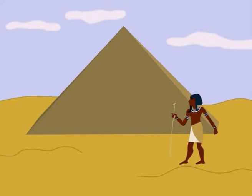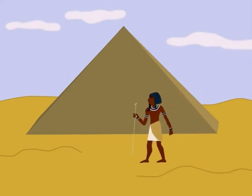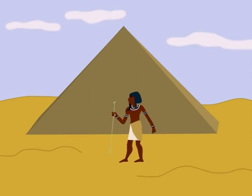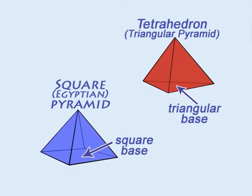Be careful not to confuse the tetrahedron with a square pyramid, or what the ancient Egyptians used to build. An Egyptian pyramid has a square at its base, whereas a tetrahedron has a triangle at its base, making it a triangular pyramid.